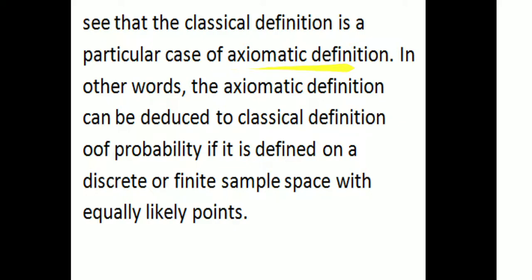In other words, the axiomatic definition can be deduced to the classical definition of probability if it is defined on a discrete or finite sample space with equally likely points. Now we can see the importance of the axioms and the theorems under the axiomatic definition.